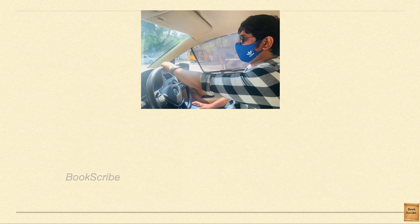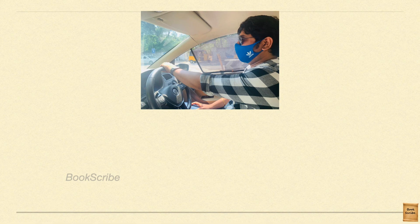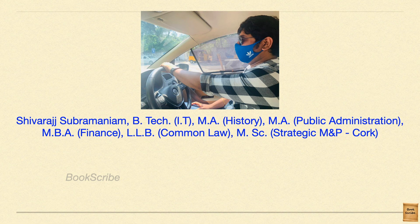So far in this chapter, we saw about luminous objects, mirrors, whether objects are opaque, translucent, or transparent, about reflection, shadows, and also about pinhole cameras. Continue to register your comments. Thanks for watching and supporting the channel.